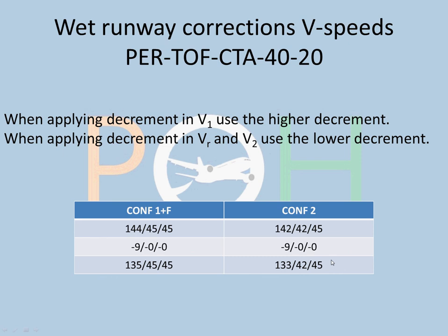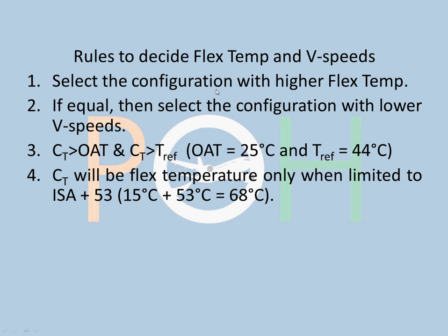Rules to decide flex temperature and V-speeds: select the configuration with the higher flex temperature — Config 2 is selected. If equal, select the configuration with lower V-speeds. The corrected temperature of 59° must be greater than OAT (25°) ✓ and greater than TREF (44°) ✓. Corrected temperature is only valid as flex temperature if limited to ISA + 53° = 15 + 53 = 68°. Our 59° is below 68°, so flex takeoff is valid.